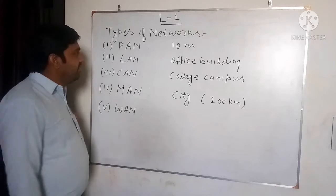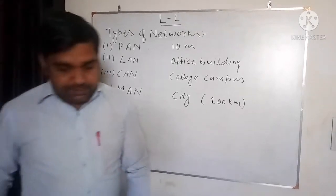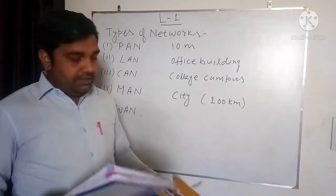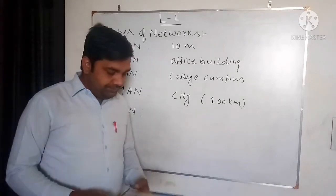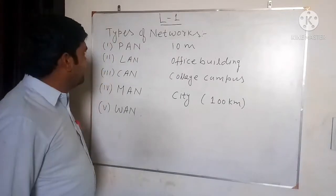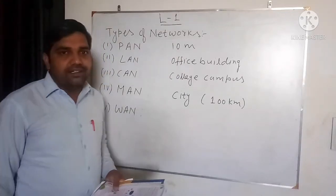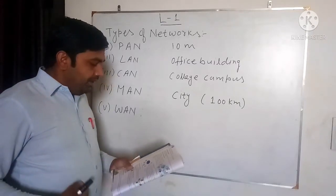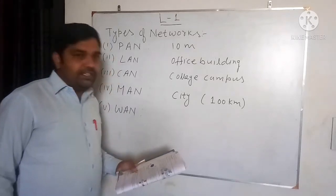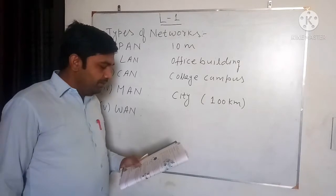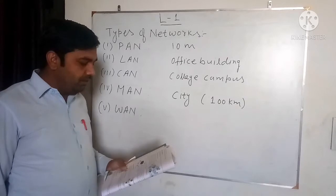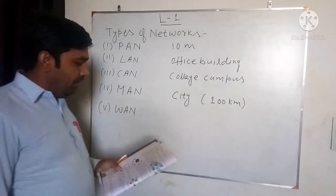First is the PAN, which is called the Personal Area Network. This PAN covers a very small network area, around 10 meters. So a 10-meter area of network is covered in the PAN. It is used for communication among devices such as laptops, mobile phones, PDA — personal digital assistant — or smartphones.